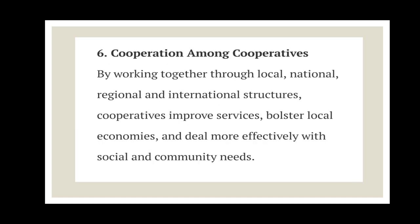The next principle is cooperation amongst cooperatives. By working together through local, national, regional, and international structures, cooperatives improve services, bolster local economies, and deal more effectively with social and community needs. For example, in the three-tier structure studied in the last lecture, at the Taluka level there is a primary society, at the district level there is the District Central Cooperative Bank, and at the state level there is the State Cooperative Bank. Amongst these cooperative institutes there should be cooperation. Cooperation among cooperatives is also a main principle of cooperative institutes.